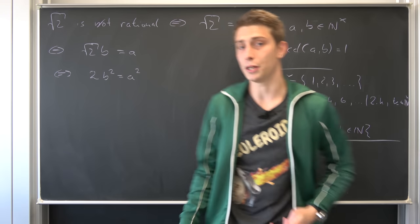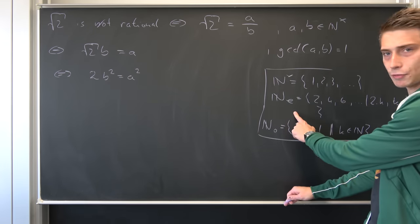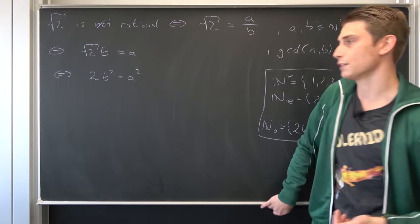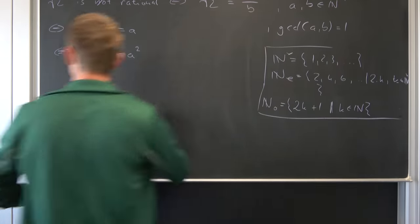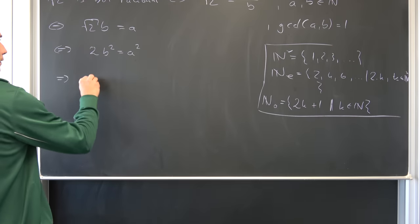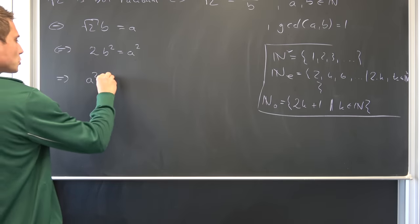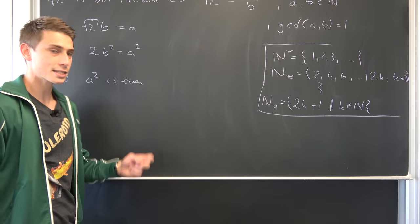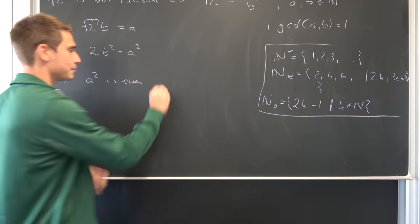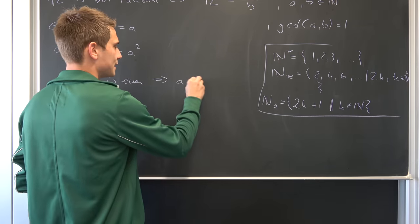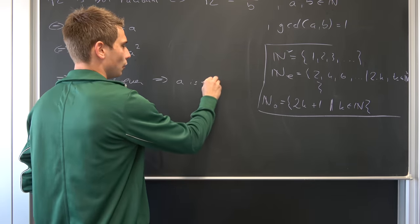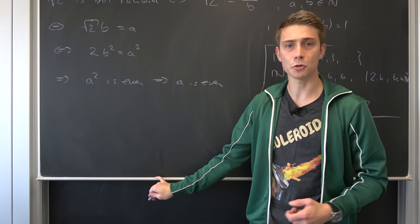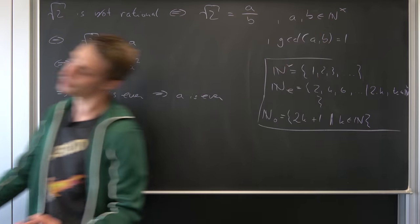By this definition right here, a squared is indeed an even number — that's a little observation. So a squared is even. And what we want to show next is that this statement indeed implies that a is also even. That's a really important statement we are going to prove on the next blackboard.